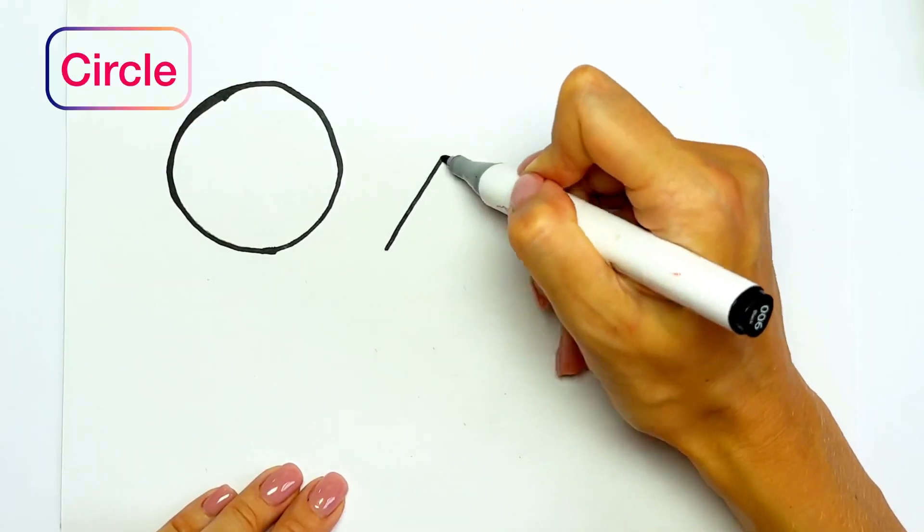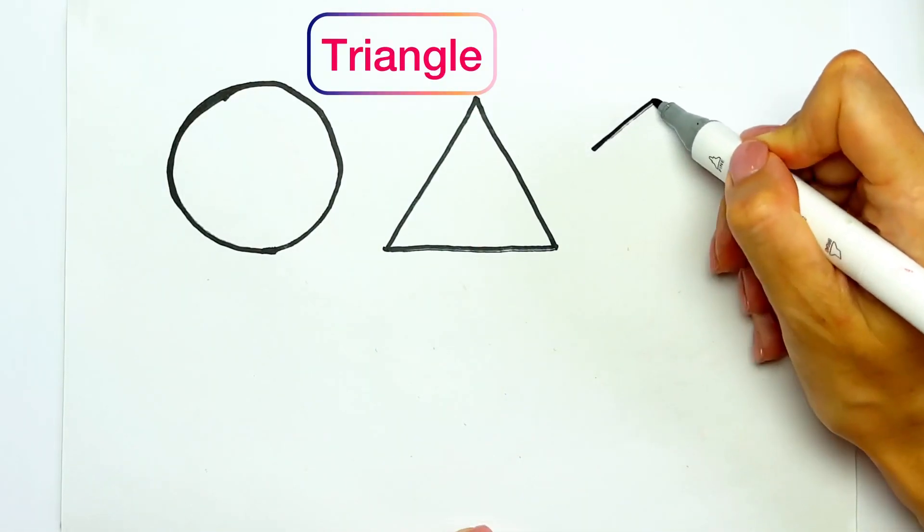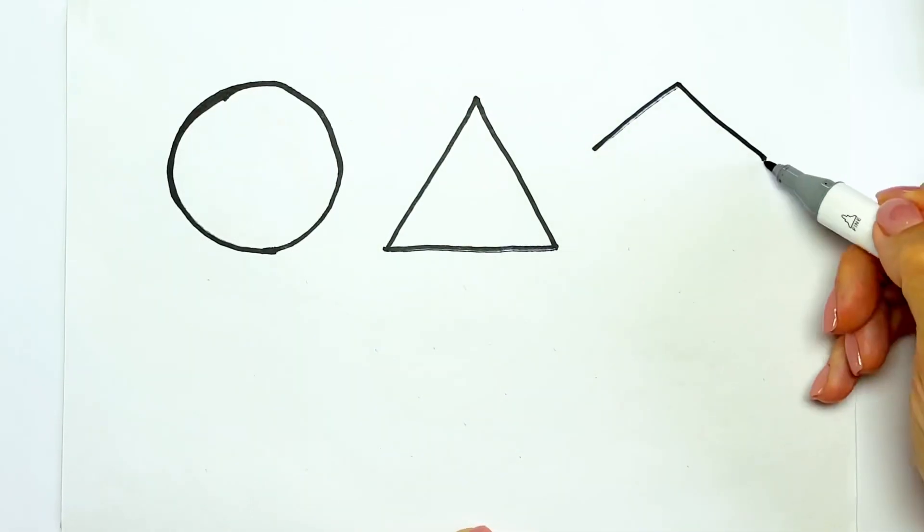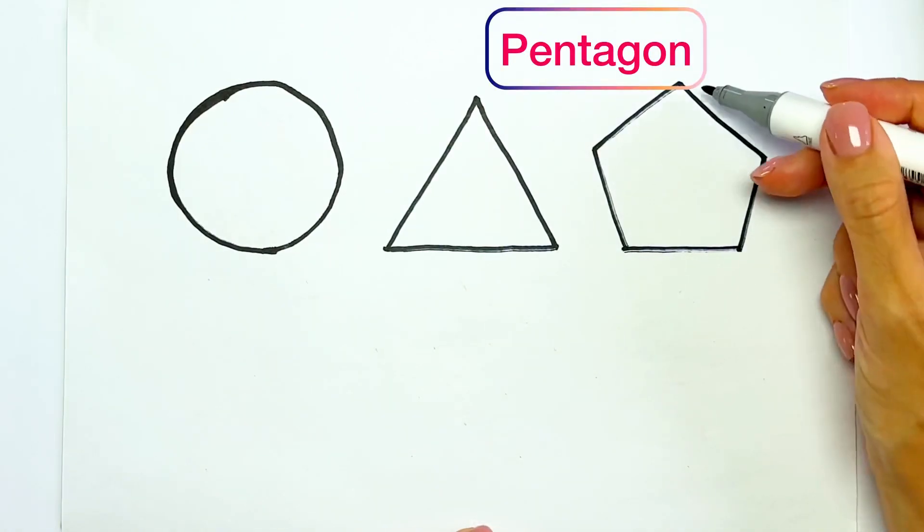The next shape is triangle. Triangle has three angles. Pentagon. Pentagon has five angles. One, two, three, four, five.